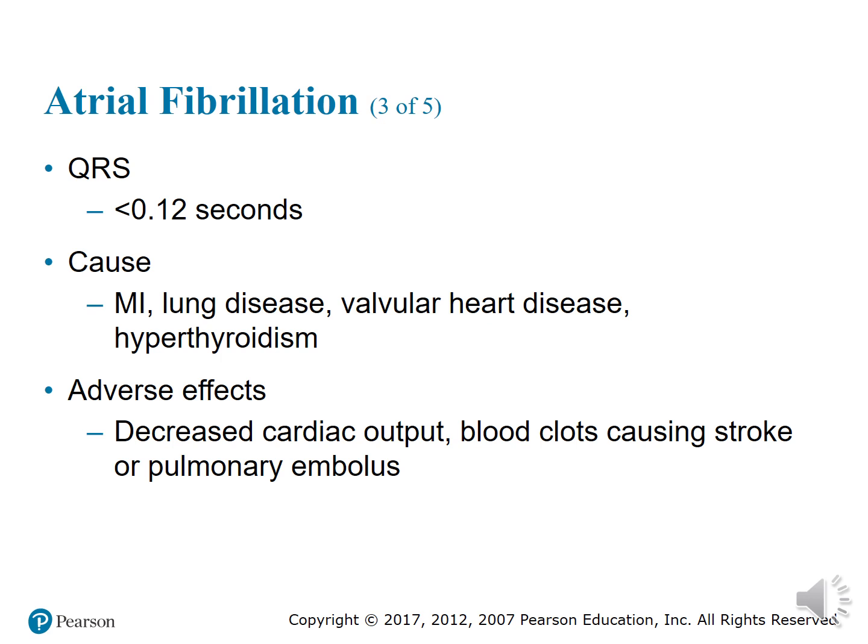Some causes of AFib include myocardial infarctions, lung disease, valvular heart disease, and hyperthyroidism or overactive thyroid. Adverse effects include decreased cardiac output. Blood clots can sometimes form due to decreased atrial kick — the blood left in the atrium can clot off and travel into the heart or cause a pulmonary embolism.